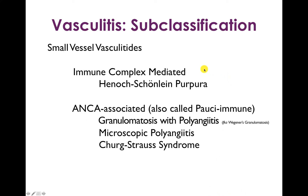The immune-complex mediated small vessel vasculitis we're going to be talking about is Henoch-Schönlein purpura. The ANCA-associated vasculitides are granulomatosis with polyangiitis, formerly known as Wegener's granulomatosis, microscopic polyangiitis, and Churg-Strauss syndrome.